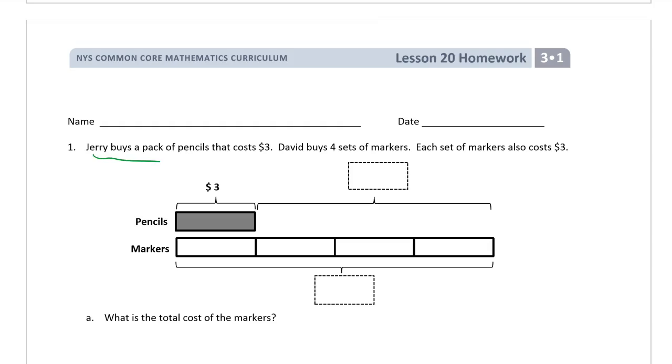We have Jerry buying a pack of pencils that cost $3, and David buys four sets of markers. Each set of markers also costs $3. So here, this is already labeled for us, but in the other ones we're going to have to make our own labels. So here we have pencils. We don't even have a question yet. We just have a tape diagram. We just got to finish labeling this. These are markers and these are pencils. We know that each set of markers costs $3, so each marker is $3.